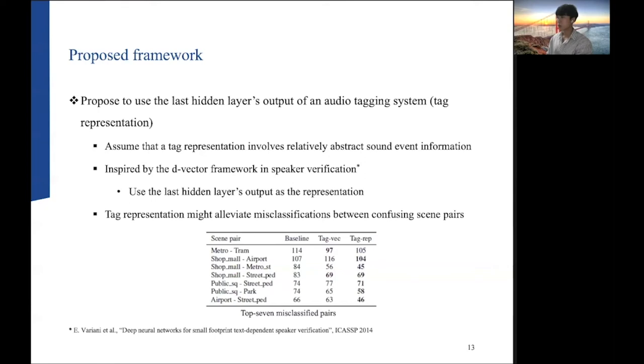Through experiments, we confirm that the misclassification of confusing pairs was alleviated when using tag representation. The below table is the result of top seven misclassified pairs of each system. Baseline is the vanilla ASC system, tag vec refers to the ASC system using tag vector, and tag rep refers to the ASC system using tag representation. Here, the bold points indicate the least misclassified result, and the tag rep shows the lowest misclassification result in the rest of the pair excluding the metro-tram pair.